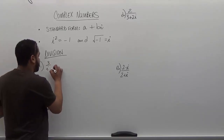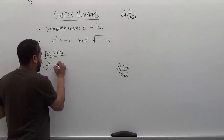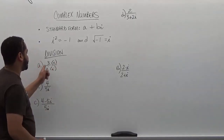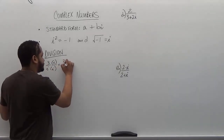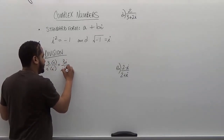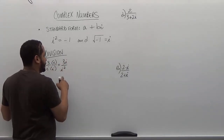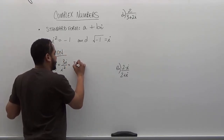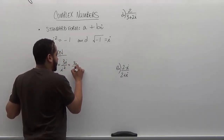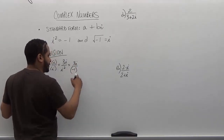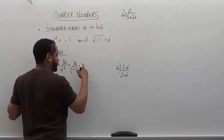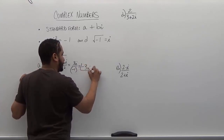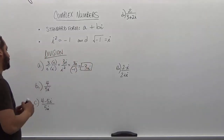By multiplying by i over i, we're going to get 3i on the top and i² on the denominator. Remembering that i² becomes negative one, we get 3i divided by negative one, which then becomes negative 3i. When we divide 3i by negative one, we get negative 3i. And that's our rationalized term.